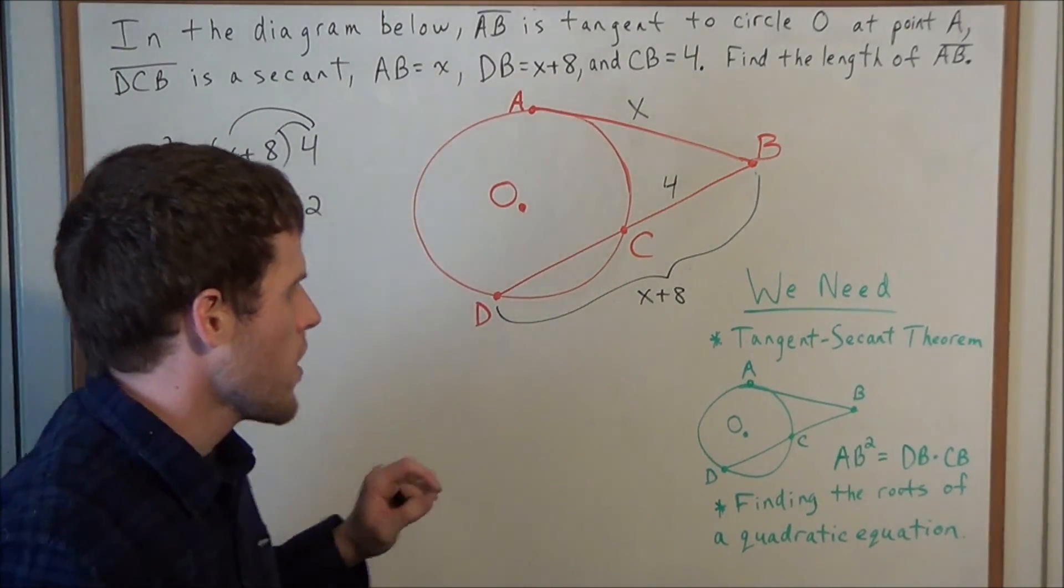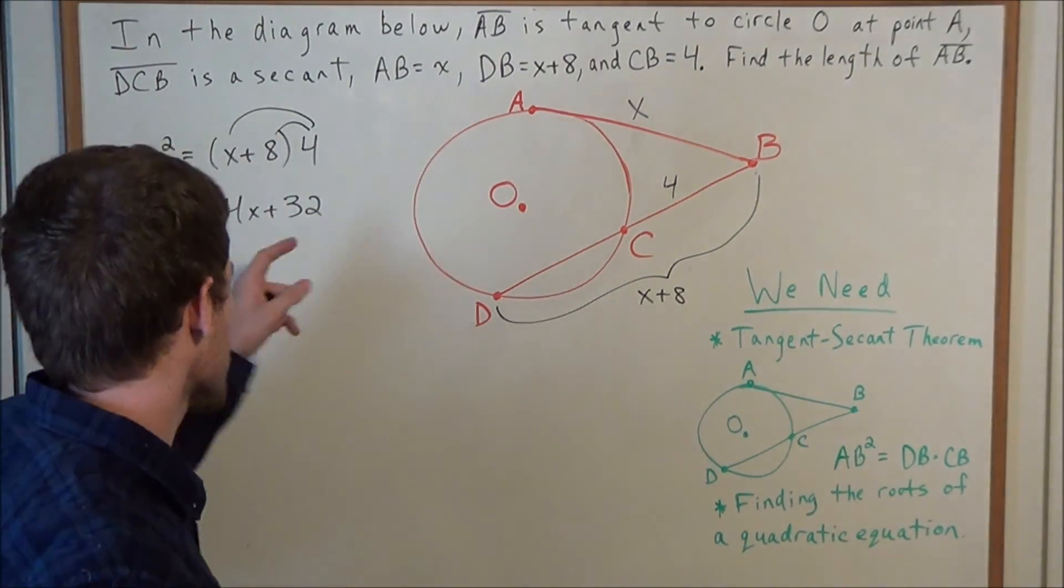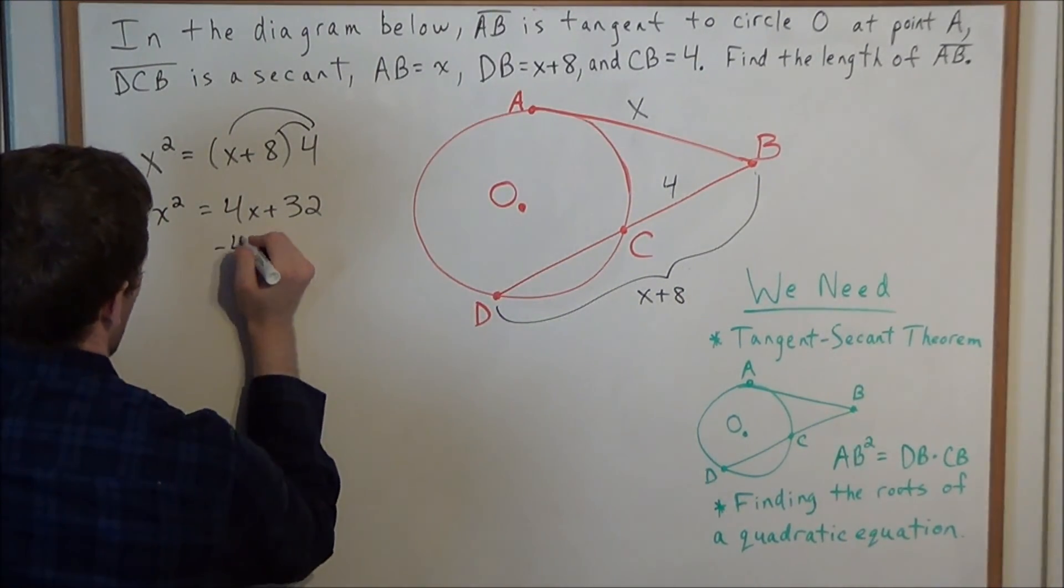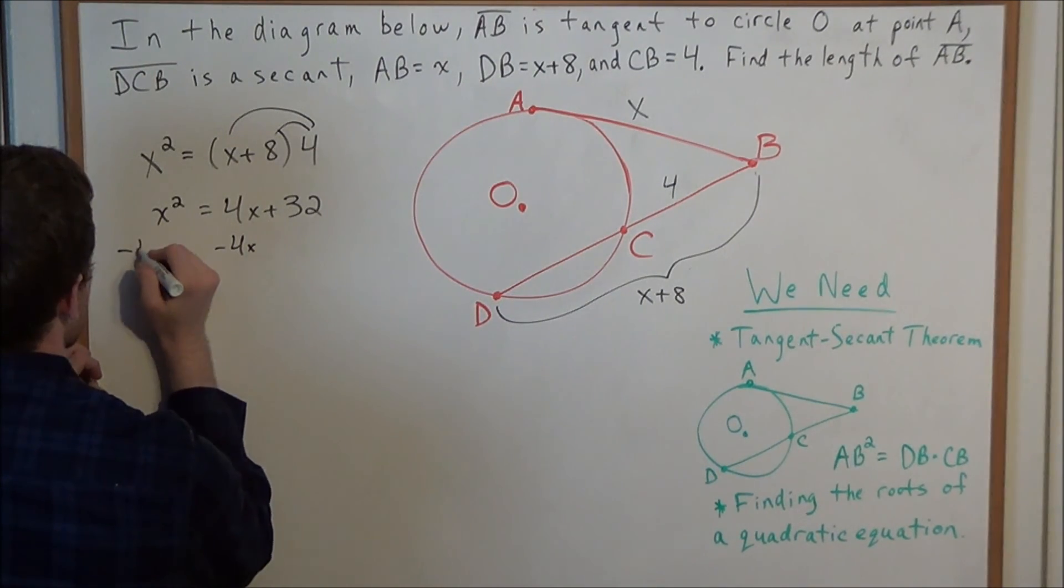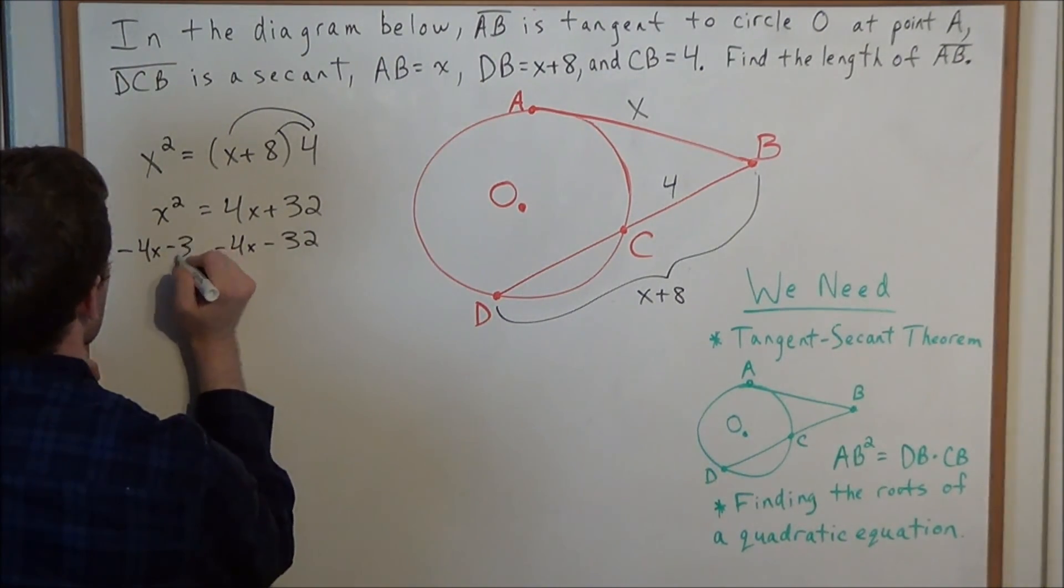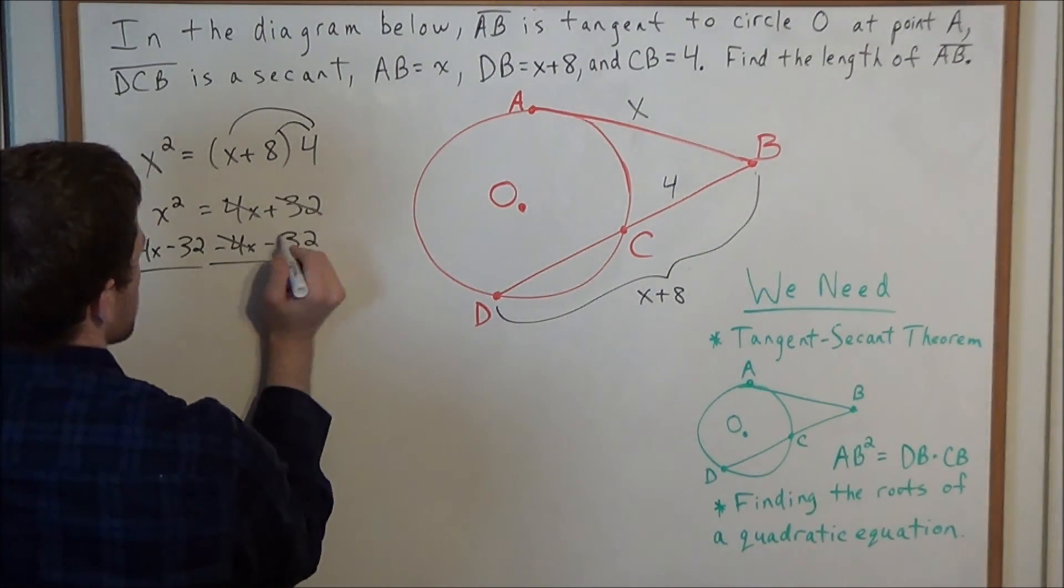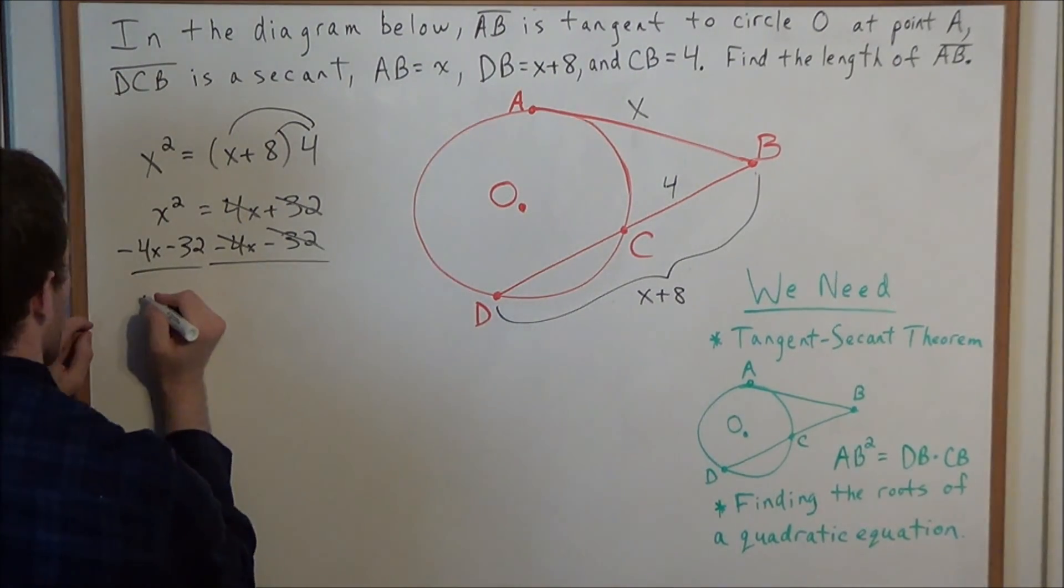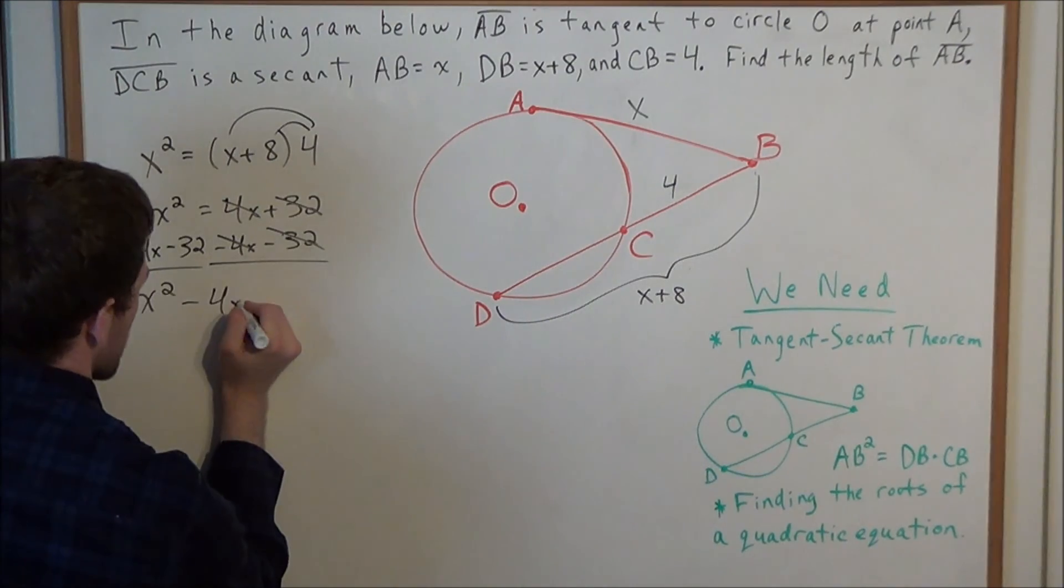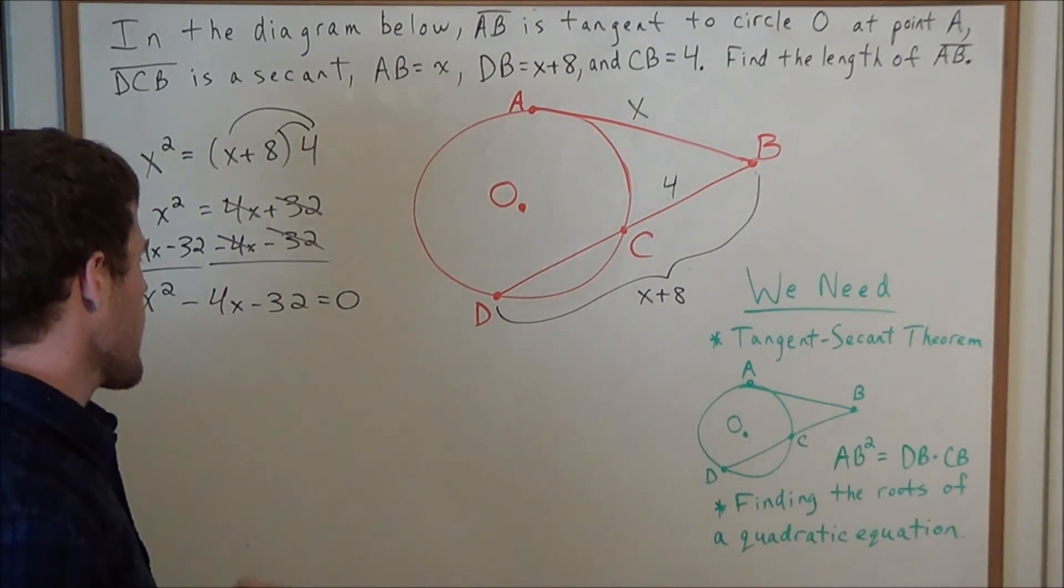So now this is where finding the roots of a quadratic equation is going to come in, we need this technique to solve this problem. So we need to bring all of the terms to one side, so we're going to subtract 4X from both sides, and we're going to subtract 32 from both sides of the equation. And now on the right hand side, 4X minus 4X cancels, 32 minus 32 cancels, and now we have X squared minus 4X minus 32 equals 0.